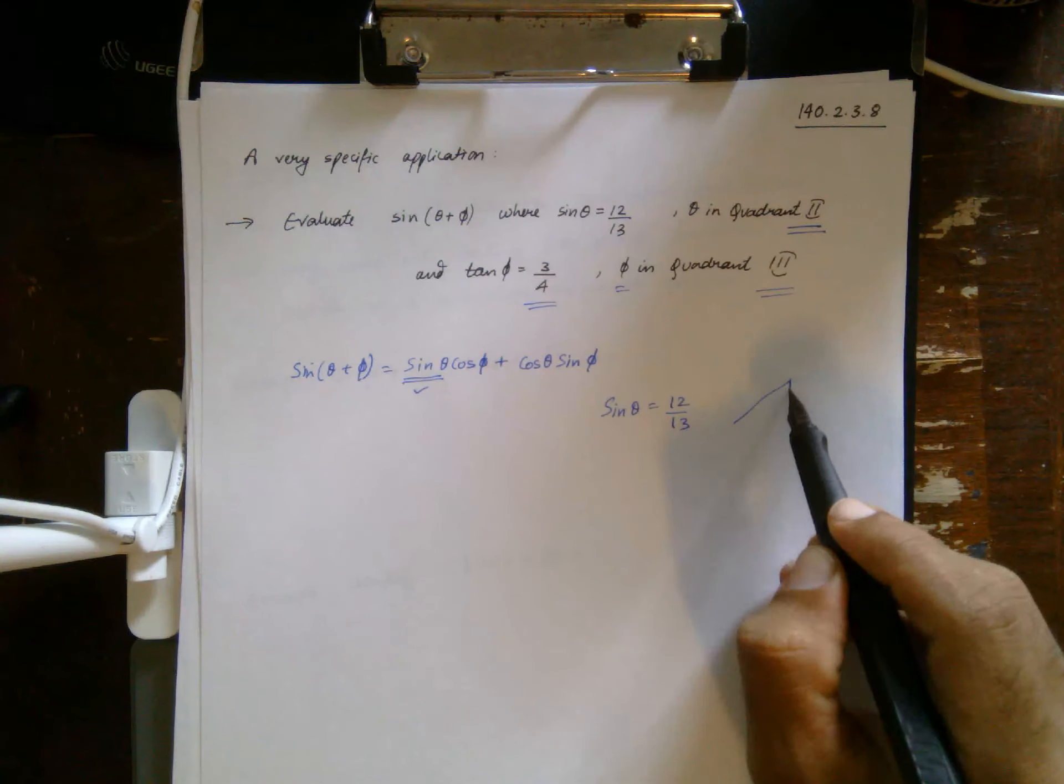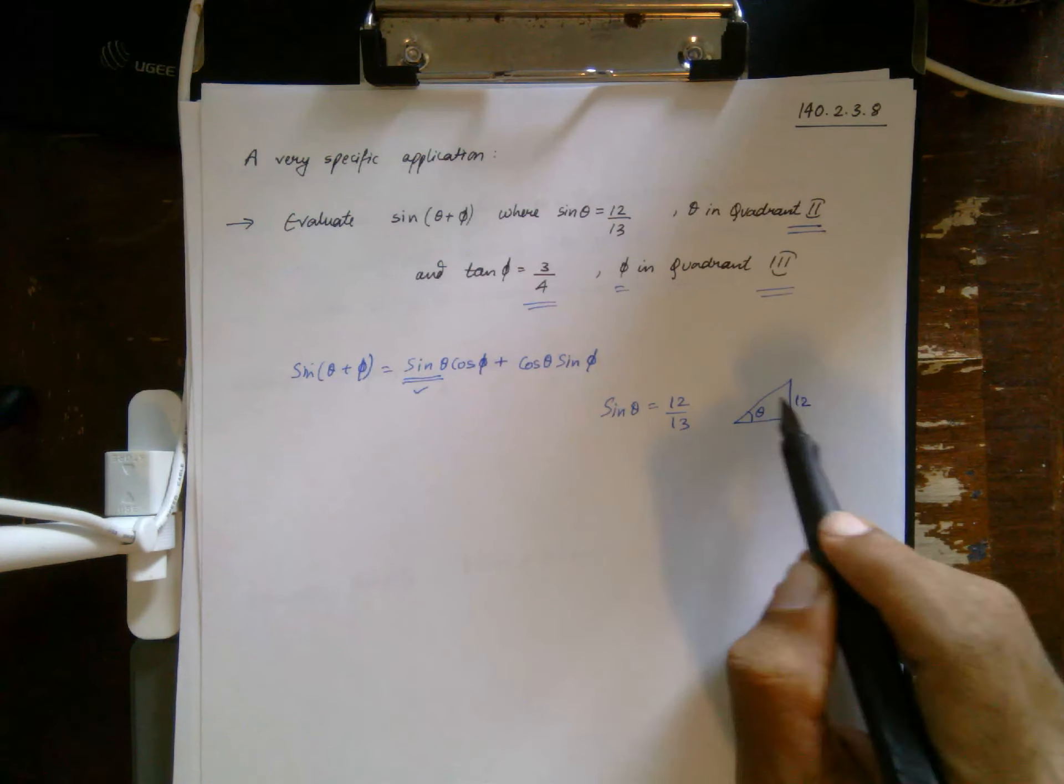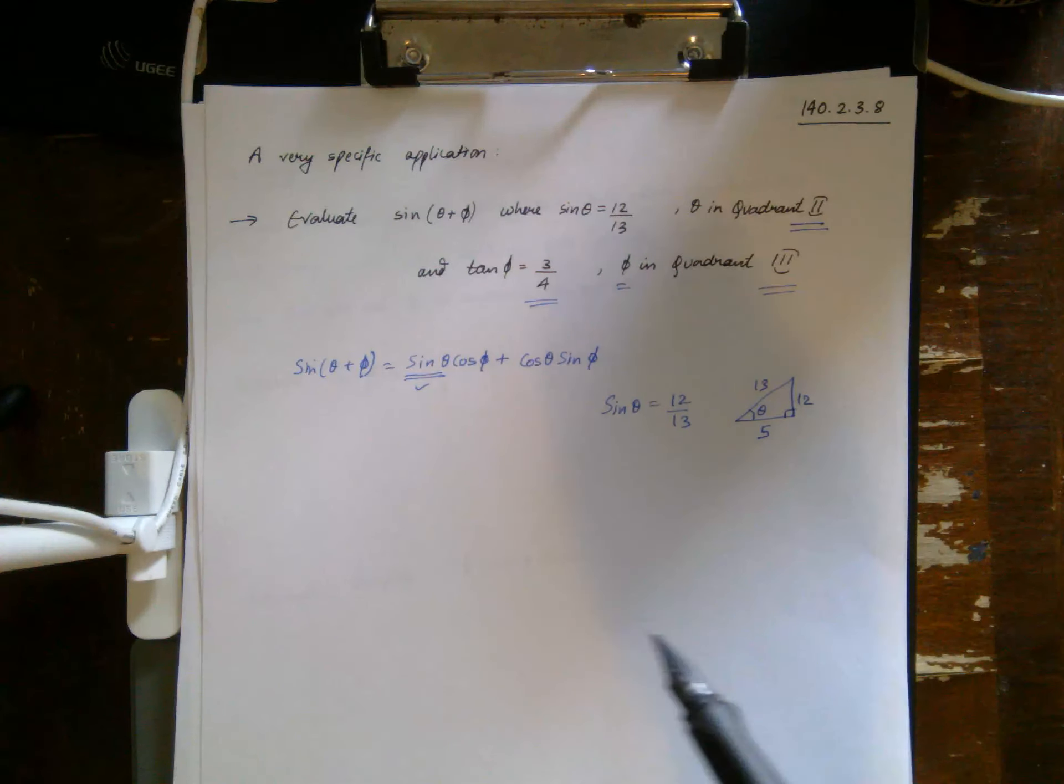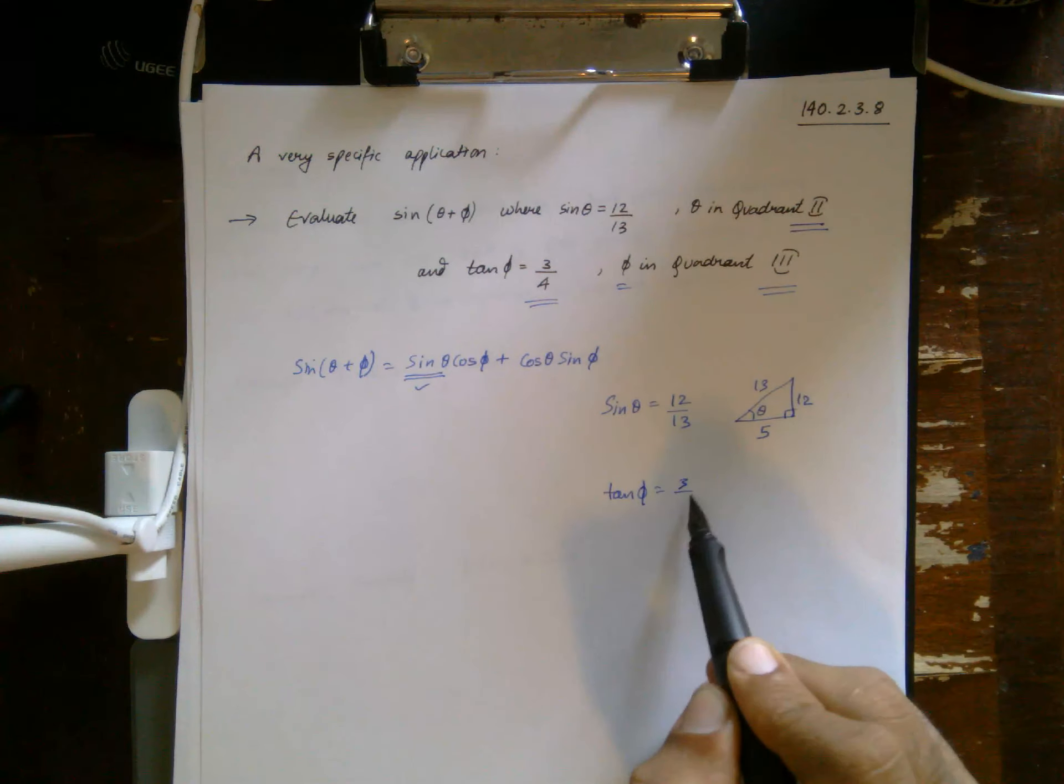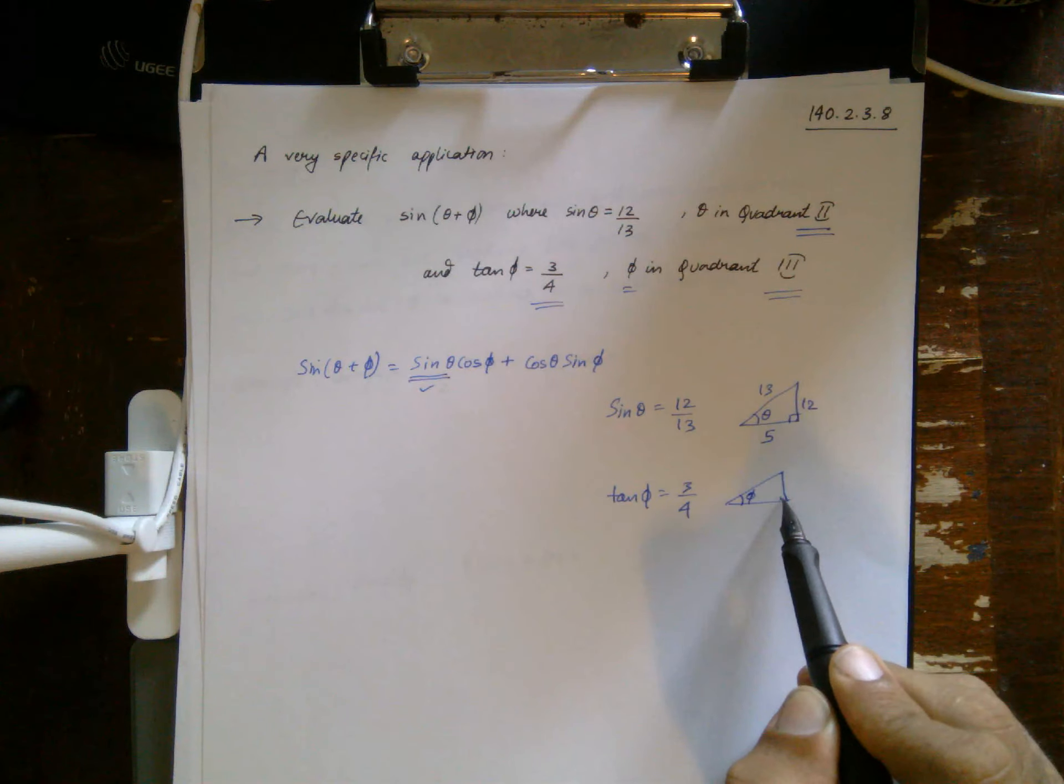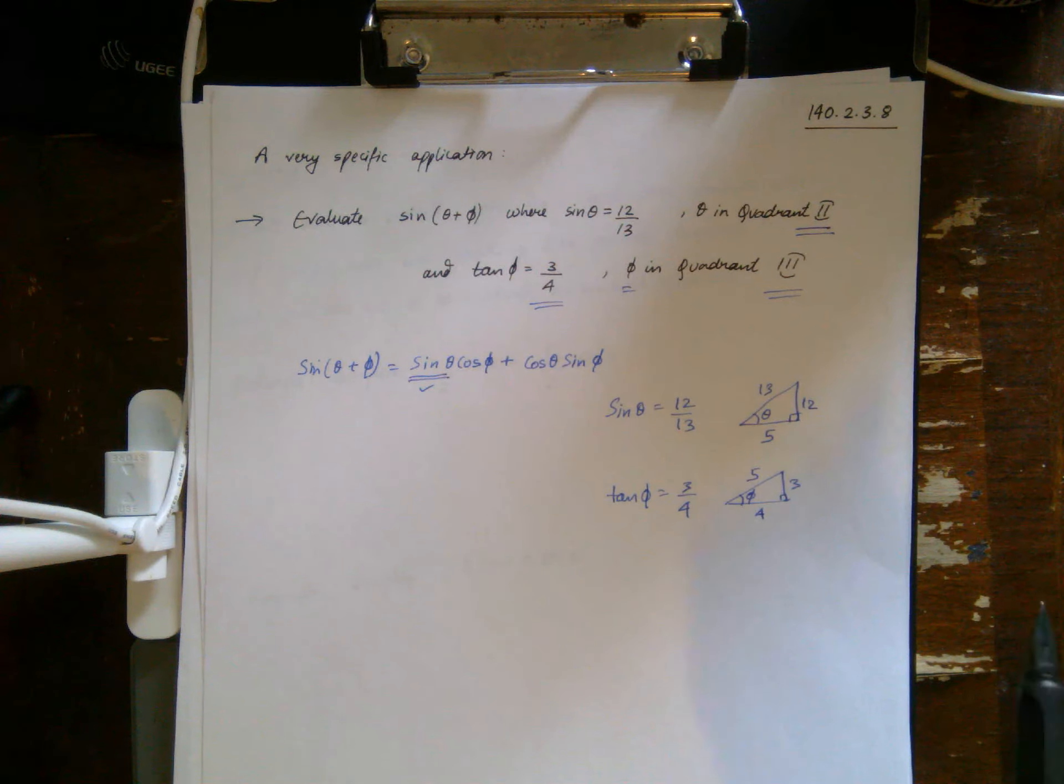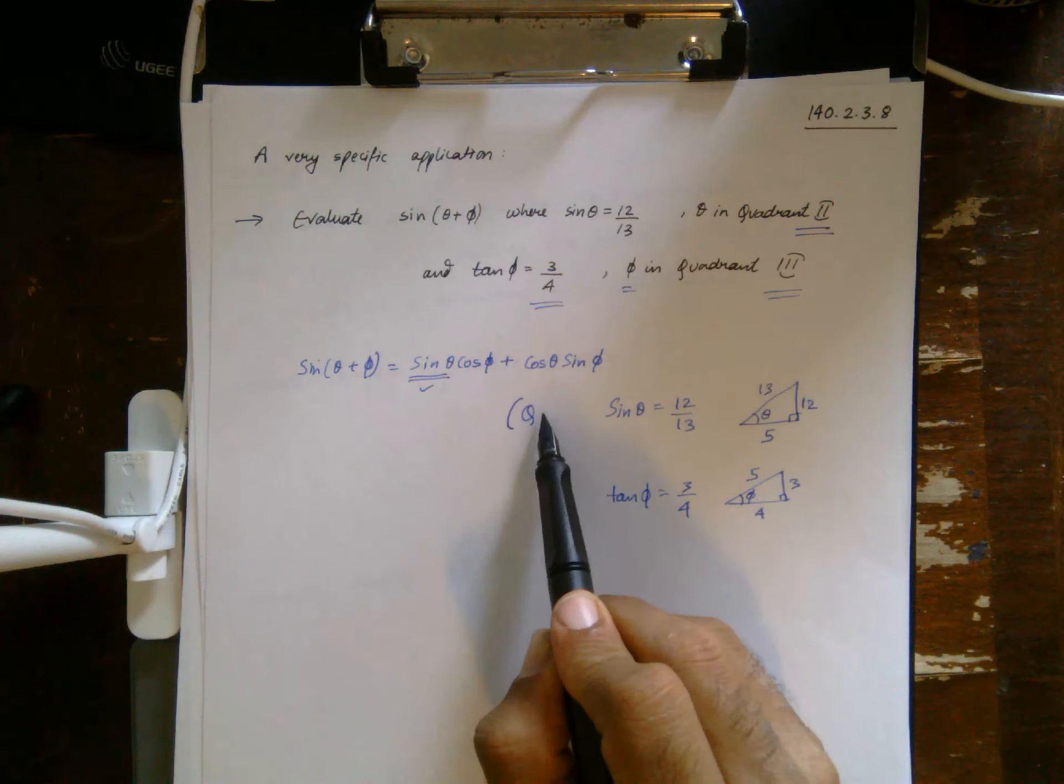However, we do know that sine theta is 12 over 13, which tells me that this is theta, opposite hypotenuse. And if you do the Pythagorean theorem, this is going to come out to be 5. Additionally, I know tan phi is 3 over 4, so there's some other triangle angle where opposite is 3 and adjacent is 4, and that will give you by application of Pythagorean theorem that the hypotenuse is 5.